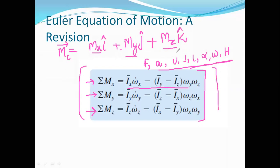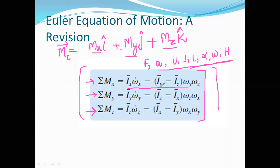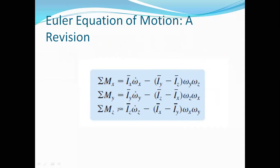As a brief revision: Ix is the second mass moment of inertia about the x-axis, written as Ixx; Iy is the second mass moment about the y-axis, written as Iyy; and Iz is written as Izz. Omega-x, omega-y, and omega-z are the components of angular velocity along x, y, and z axes. Omega-x-dot, omega-y-dot, and omega-z-dot are their derivatives. We call these the Euler equations of motion, to be used in describing the motion of the gyroscope.